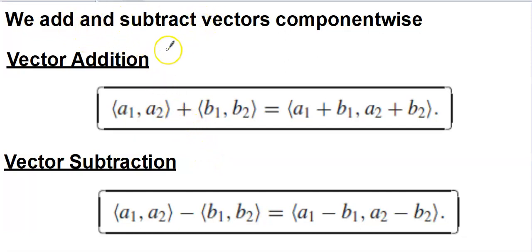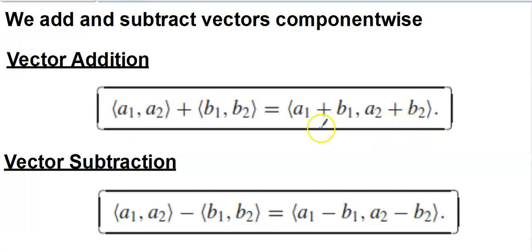Adding and subtracting vectors is super easy. We perform this process using a component-wise method. Vector A has an X component of A1 and a Y component of A2. Vector B has an X component of B1 and a Y component of B2. When we add those two vectors together, we add the like components — the X components get added together, and the same for the Y components. When you do subtraction, you use the same process, but you have to be a little more careful about order because addition is commutative and subtraction is not.